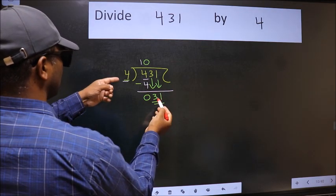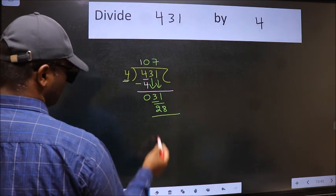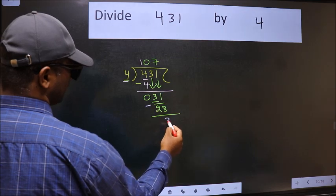A number close to 31 in the 4 table is 4 sevens, 28. Now, we should subtract. We get 3.